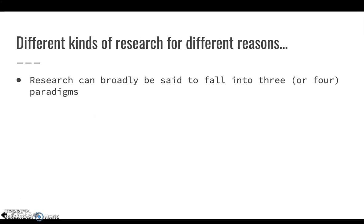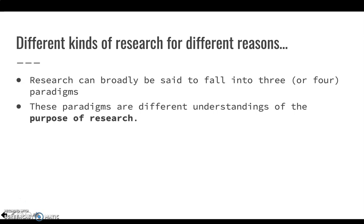There are different kinds of research for different reasons. Research can be broadly said to fall into three or four main paradigms, which you will find more of in the Goober and Lincoln reading in Toolkit A, and also in the Grant and Giddings reading for this week. These paradigms are different understandings of the purpose of research — why we do it and how we do it.